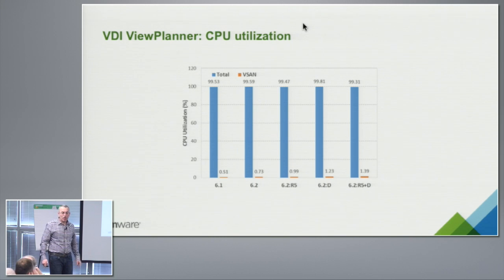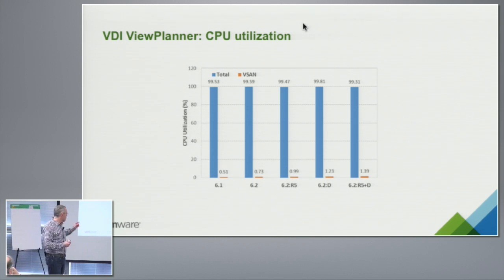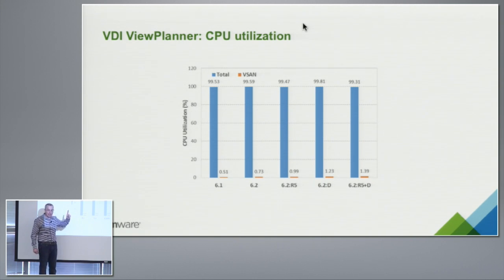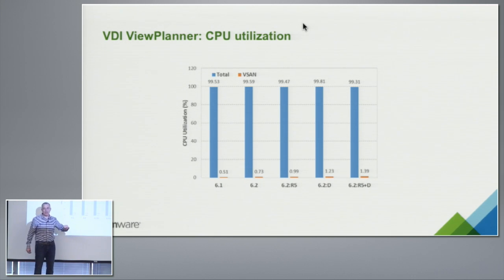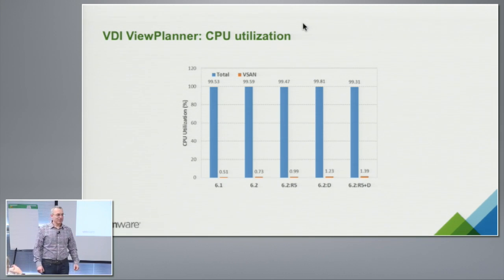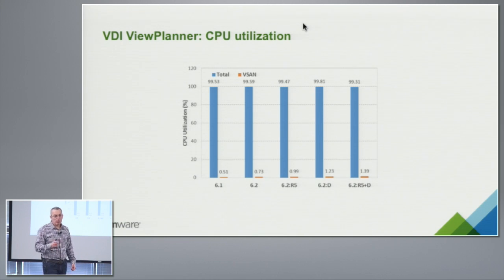What does it mean in CPU terms? For virtual desktop, you want to pack as many VMs as you can. Here the numbers were with 145 virtual desktops per host. We are at 0.5% CPU for vSAN in 6.1; with checksums and these features it went to 0.7% in 6.2, and then to 1.4% with everything on — it almost tripled. But from what starting point? Essentially, your virtual desktop consolidation ratios are not affected. You don't have to dedicate a quarter of your server to running the storage workload.